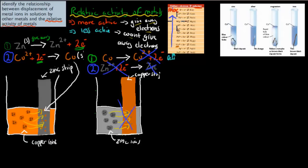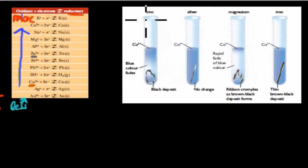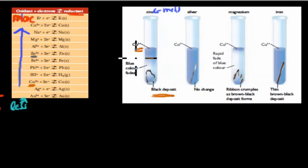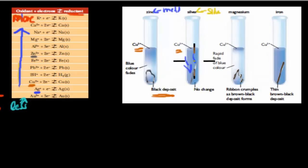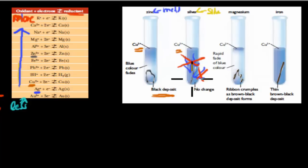Let's go over four examples. Example 1: zinc as the metal strip and copper as the solution — same as before. Deposits do occur because copper deposits on the zinc since zinc is the more active metal. Example 2: silver as the metal strip and copper as the solution. Copper is higher on the table and silver is one below, so silver is less active than copper. We expect nothing — no change — because copper does not deposit onto the silver strip.